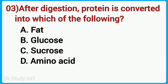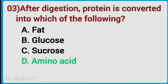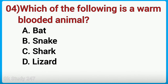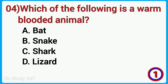After digestion, protein is converted into which of the following? Answer is amino acid. Which of the following is a warm-blooded animal? Answer is bat.